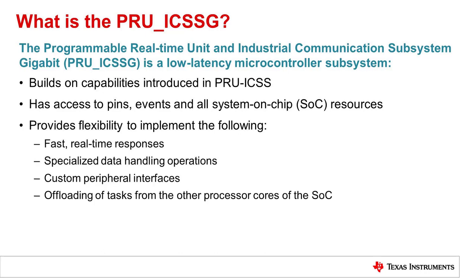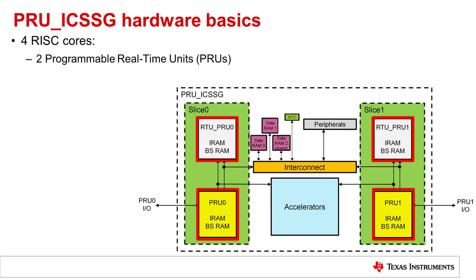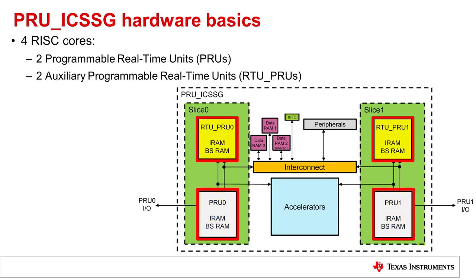The subsystem can also offload tasks from other processor cores of the SOC. At the heart of each PRU-ICSS-G are four 32-bit RISC cores: two Programmable Real-Time Units or PRUs, and two auxiliary PRU cores called RTU-PRUs — referred to in this training simply as RTUs. The main difference between the PRU and RTU cores is that the RTUs don't have any access to IOs. The RTUs are strictly available for data processing, while the PRUs can be used for I/O control and/or data processing.